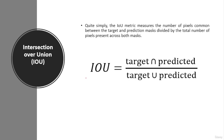In the formula, intersection over union is equal to target intersection predicted. This intersection between target and predicted is comprised of the common pixels found in both the prediction mask and the ground truth mask. That is divided by target union predicted. The union between target and predicted is comprised of all the pixels found in either the prediction or the target mask.